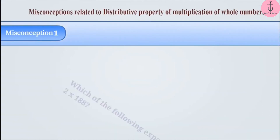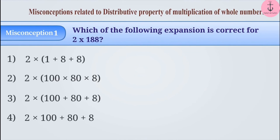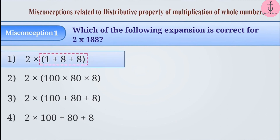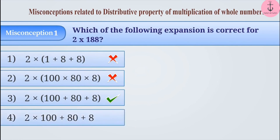Misconception 1: which of the following expansions is correct for 2 into 188? Sometimes distribution is understood as separating the digits, so option 1 — an incorrect answer — is chosen. Similarly, instead of adding the digits, they are multiplied, and option 2 — also incorrect — is chosen. With correct understanding, option 3 is chosen, which is the correct answer. Sometimes the usage of brackets is considered unnecessary and ignored, and the numbers are expressed as in option 4, which is also incorrect.